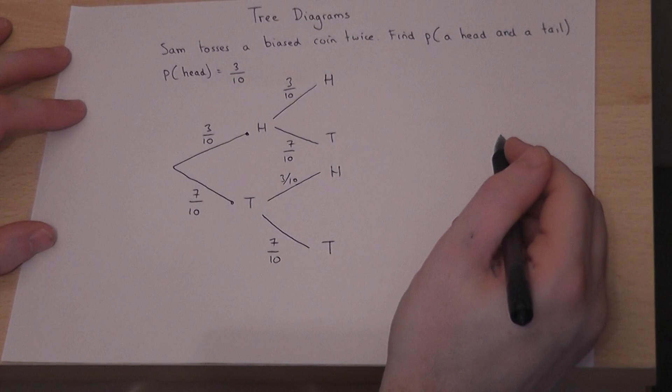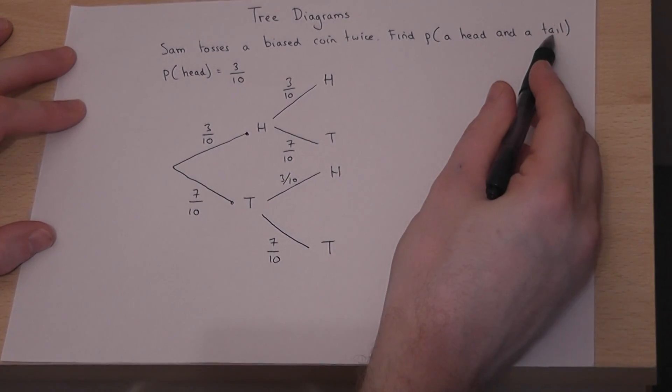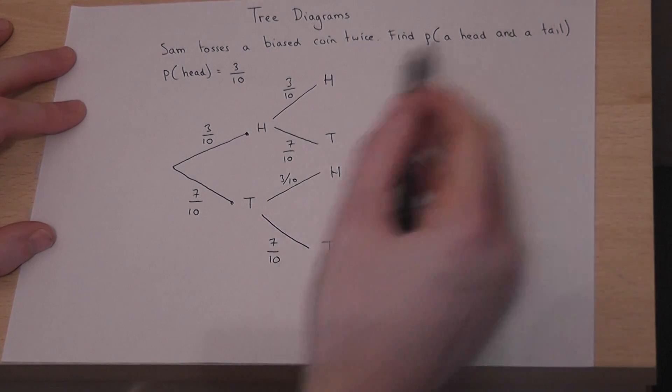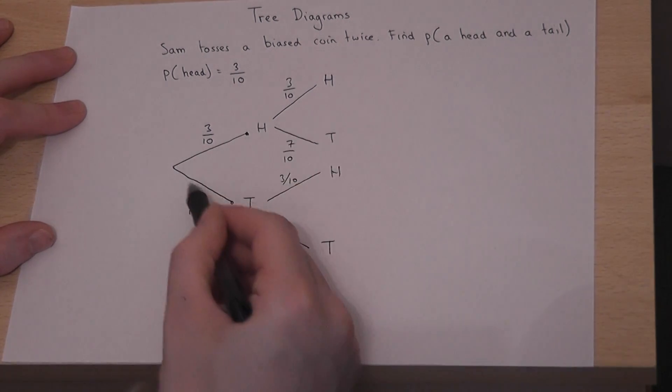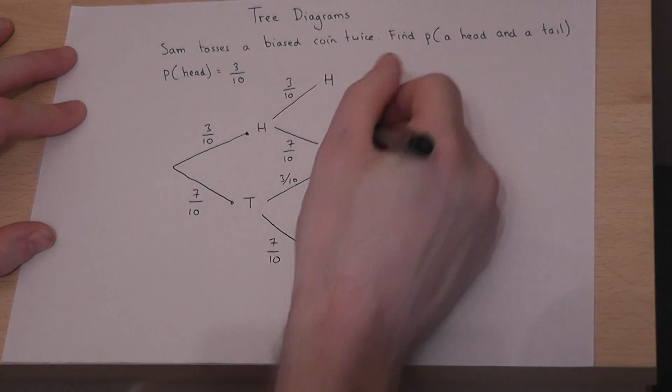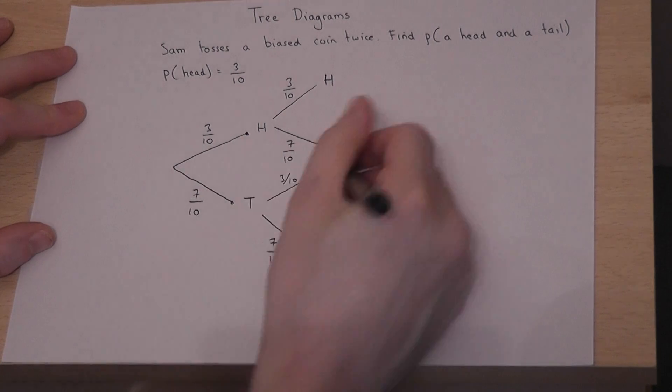Now then, we want to find the chance of getting a head and a tail in any order. So what we do is we look for the journeys through the tree diagram which satisfy the condition a head and a tail. That's head then tail, or tail then head.